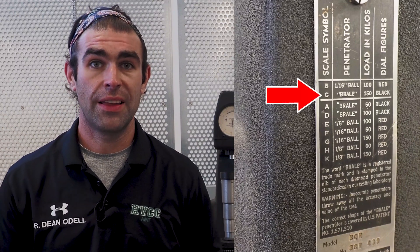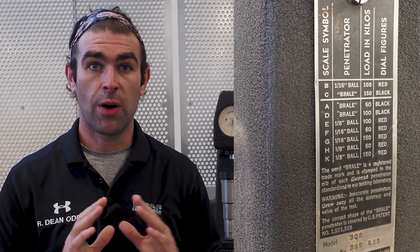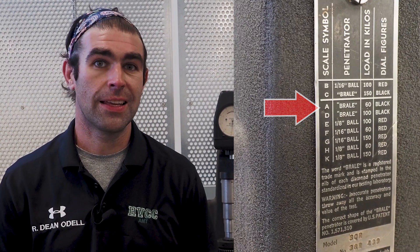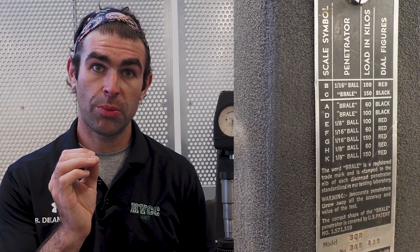Rockwell C uses the diamond indenter and 150 kilograms of force for hardened steels. Rockwell B uses 100 kilograms of force and the 1/16th ball indenter. It is for steels, low carbon steels, aluminums, and malleable irons - things that aren't quite as hard as hardened steel. Rockwell A uses the diamond indenter but only 60 kilograms of force. This is kind of a bridge test. It can be somewhat accurate on softer steels because there's less force being applied, but it still has the diamond indenter so it can indent hardened steels. Rockwell A spans the range between the soft specimens from B and the very hard specimens that a C would test. So Rockwell A can be used to determine which test you should use.